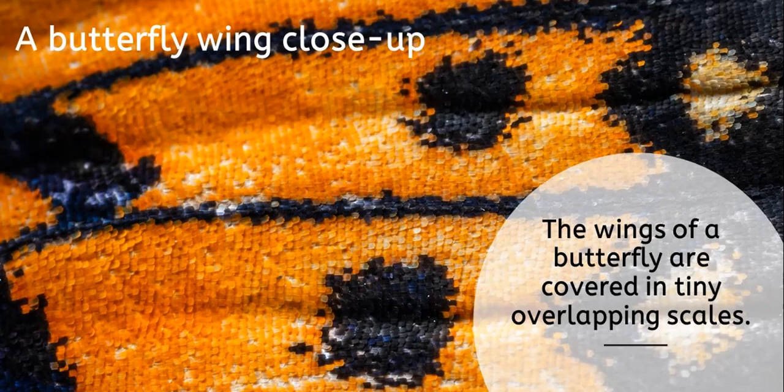Here's a really cool close-up picture of a butterfly wing. You can see that it's made of tiny scales, kind of like a reptile or a fish — just to see that similarity. They're really tiny and they overlap.